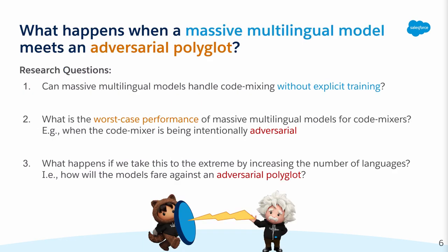Therefore, we were curious to know what happens when a massive multilingual model meets an adversarial polyglot. Specifically, whether these models can handle code mixing without being explicitly trained to do so, and what the worst-case performance could be when they encounter code-mixed inputs. We attempt to answer these questions by constructing adversarial attacks inspired by code mixing.